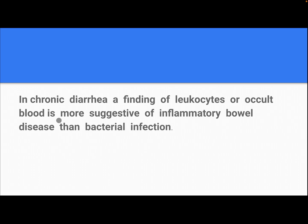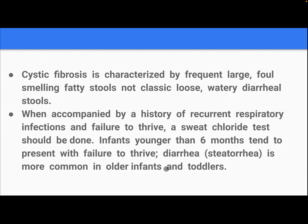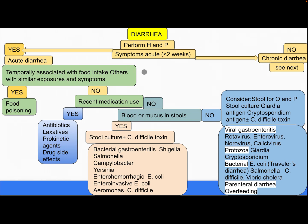In chronic diarrhea, a finding of leukocytes or occult blood is more suggestive of inflammatory bowel disease than bacterial infection. Cystic fibrosis is characterized by frequent, large, foul-smelling fatty stools, not classic loose watery diarrheal stool, when accompanied by a history of recurrent respiratory infections and failure to thrive. A sweat chloride test should be done. Infants younger than six months tend to present with failure to thrive; diarrhea is more common in older infants and toddlers.